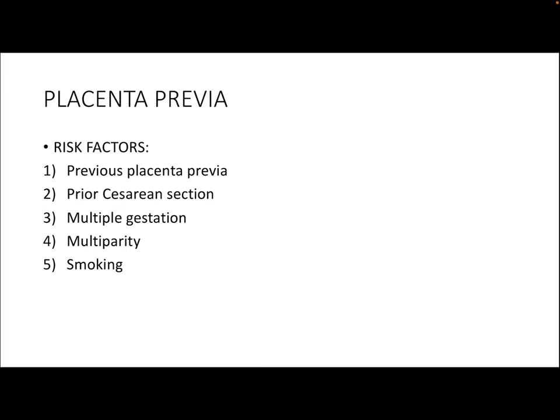Coming first to placenta previa. A few risk factors for placenta previa would be a history of previous placenta previa, a prior caesarean section, multiple gestation, multiparity, and smoking. The pathogenesis of placenta previa is largely unknown. It is thought to occur due to reduced vascularization of the uterine decidua in the upper segment of the uterus, possibly due to previous surgery, so that trophoblast implantation is promoted in the lower uterine cavity.